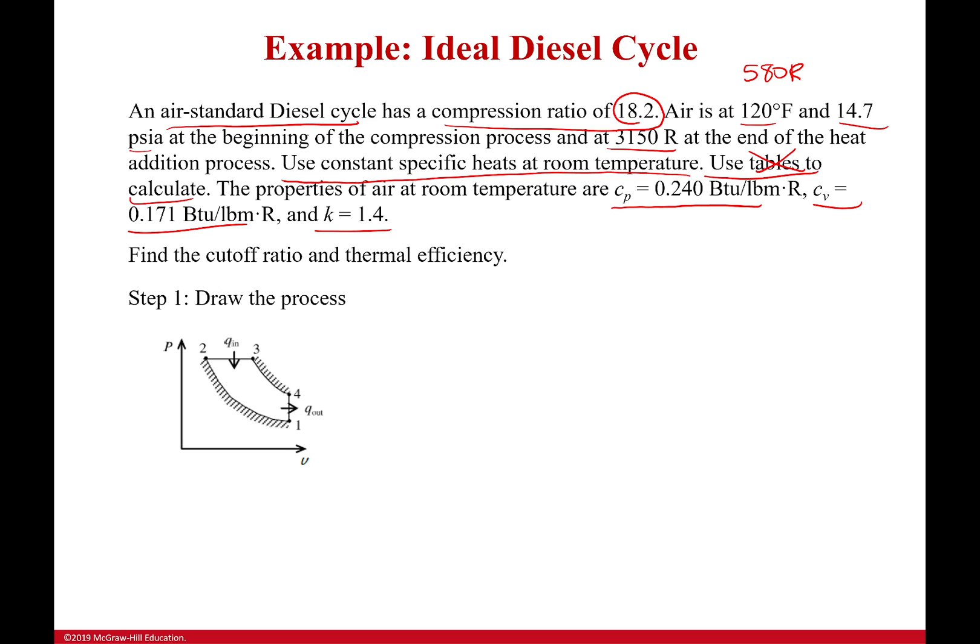So, if we're going to find everything, what we're going to need to do is figure out what is first the volume at 2 and the volume at 3. Volume at 2, we can do fairly simply because it's isentropic compression, and therefore we can use our isentropic relations.